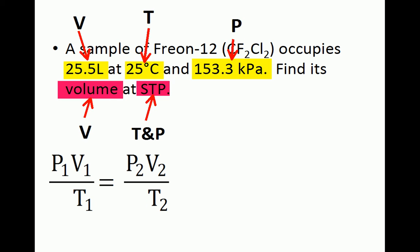Now we will write each set of parameters that are given in the problem. The first set of conditions, highlighted in yellow, will be given the subscript 1, and the second set, highlighted in pink, will be given the subscript 2.